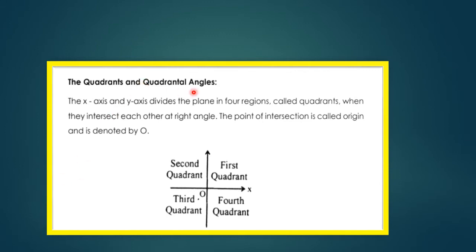Quadrant and quadrantal angles: the x-axis and y-axis divide the plane into four regions called quadrants when they intersect each other at right angles. The point of intersection is called the origin, denoted by O. In the first quadrant, x is positive and y is positive. In the second quadrant, x is negative and y is positive. In the third quadrant, x is negative and y is negative. In the fourth quadrant, x is positive and y is negative.